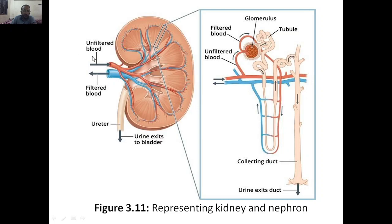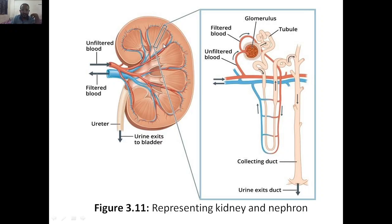Just like in the lung, unoxygenated blood enters and oxygenated blood comes out — similarly, here in the kidney, unfiltered blood enters. Whatever blood is coming from all parts of the body will enter the kidney. The nephrons in the kidney filter the blood, remove waste, and also remove excessive fluid. Then the filtered blood goes out.